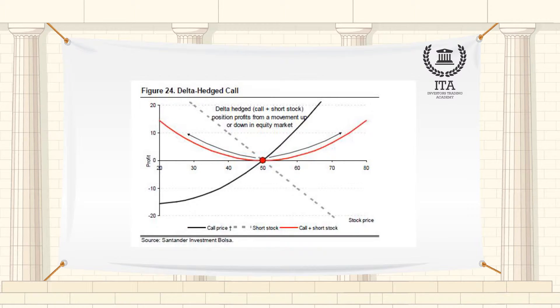The most famous use of a Greek to protect your position from market movements is delta hedging. By making your portfolio delta neutral, you are protected to a degree from modest price movements.